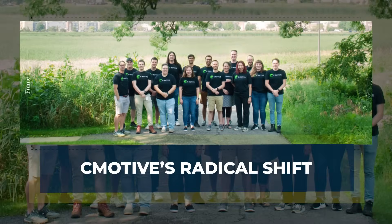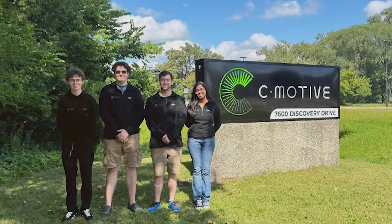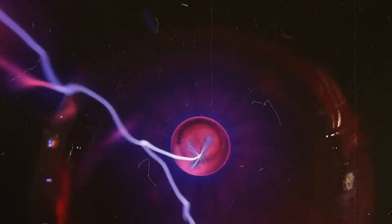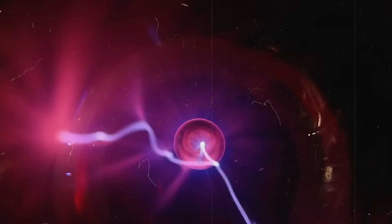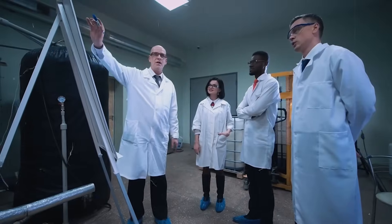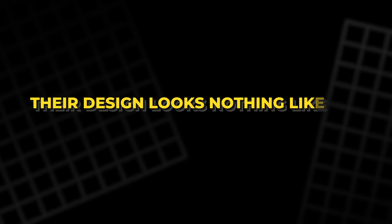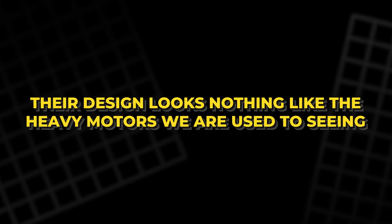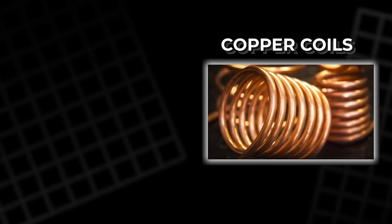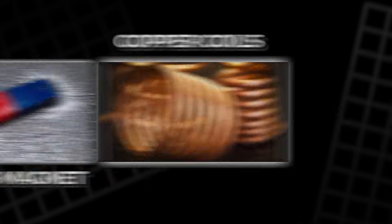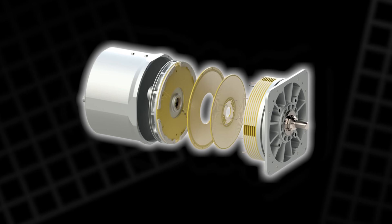C-Motive's radical shift. A small company named C-Motive has taken the old static electricity idea and rebuilt it for the modern world. Their design looks nothing like the heavy motors we are used to seeing. Instead of copper coils and strong magnets, they use thin plates set on the rotor and stator.